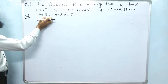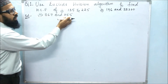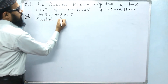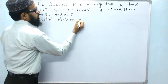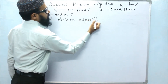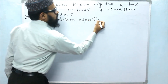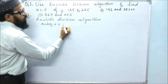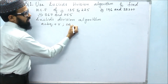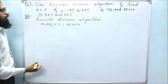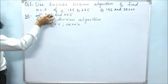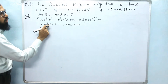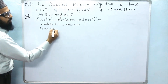In the third problem, the given numbers are 867 and 255. Let us solve this using Euclid's division algorithm: A equals BQ plus R, where 0 is less than or equal to R and R is less than B. Since 867 is bigger, we write it in place of A, and B is 255.